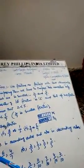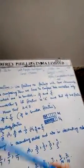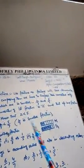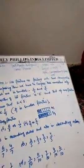Yesterday we learned about like fractions and unlike fractions. Like fractions are those fractions which have the same denominator, and unlike fractions are those fractions which have different denominators.